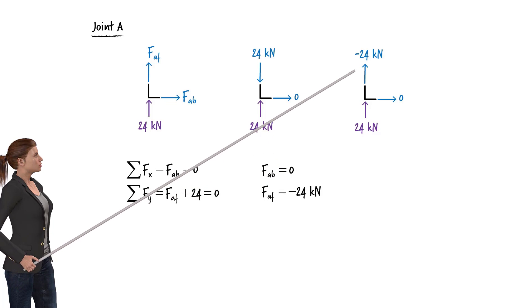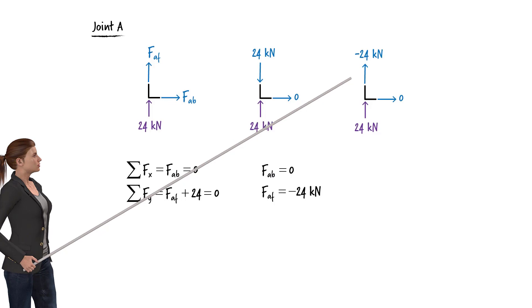I am going to keep the direction of the arrow as was initially assumed, and write negative 24 kilonewtons for its magnitude.